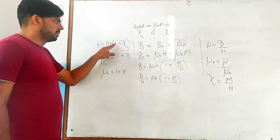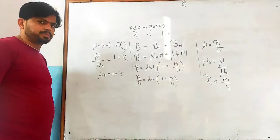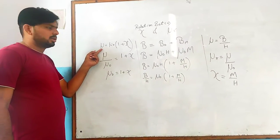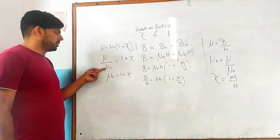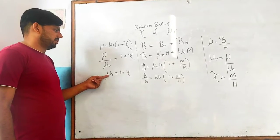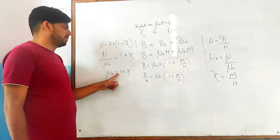Mu equals mu not times 1 plus susceptibility. Now mu not will go to the other side. So mu upon mu not - what is this? Relative permeability. Relative permeability formula is 1 plus chi.